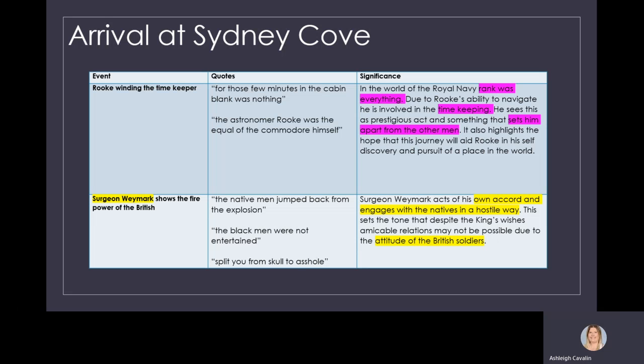When we look at the landing, Event 2, Surgeon Waymark shows the firepower of the British. This is a significant event. Surgeon Waymark acts of his own accord and engages with the natives in a hostile way. He fires his weapon at the shield of a native man to try to communicate with them when their other attempts had not worked. This sets the tone that despite the King's wishes for amicable relations to be made with the natives, this may not be possible due to the attitude of the British soldiers.